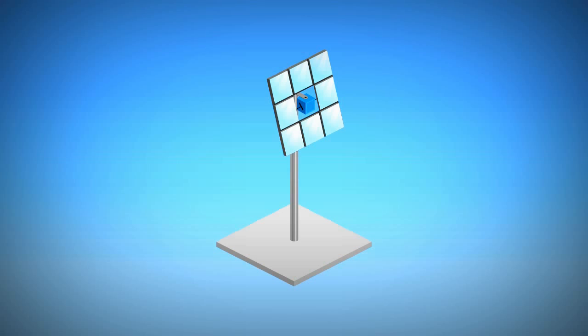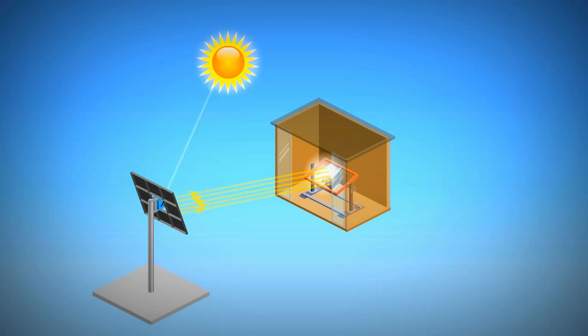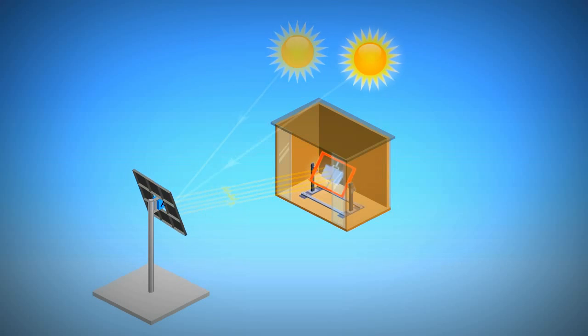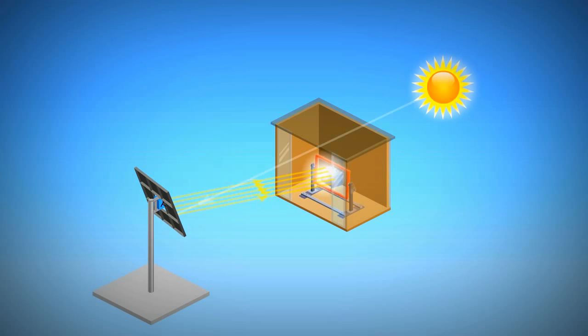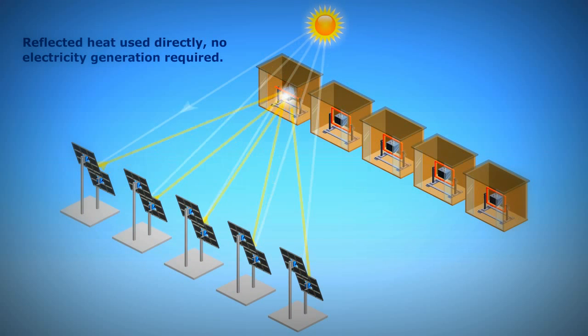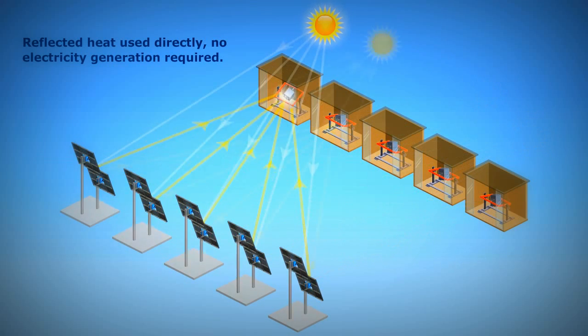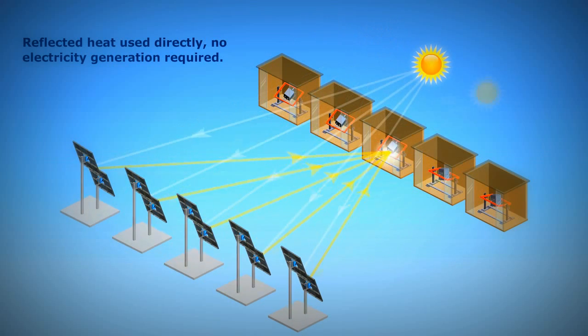Using heliostats. A heliostat is a simple computer-controlled mirror which reflects the sun onto a target. As the sun moves across the sky, the heliostat adjusts to keep the target heated. A group of heliostats can work together to create a powerful, controllable heat source for rotational molding. Free, clean, unlimited energy directly from the sun.